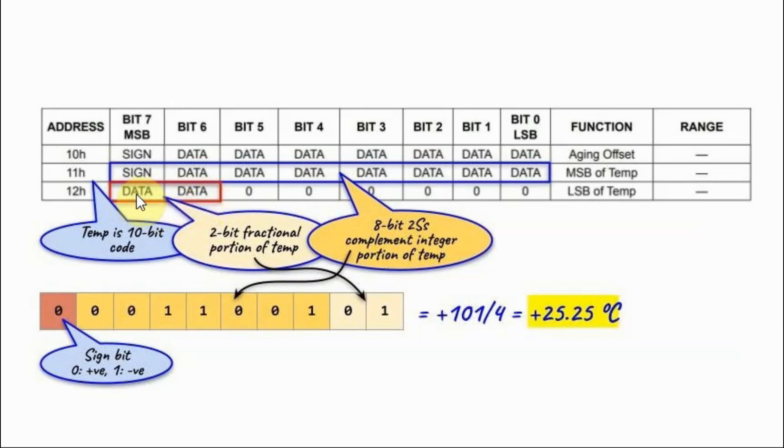If the value is 10, then we have .5. If the value is 11, then we have .75. So as an example, for this given value for the temperature, we have 25.25 degrees Celsius.